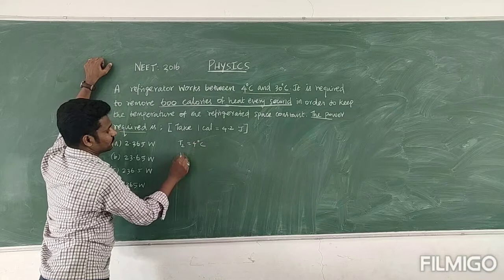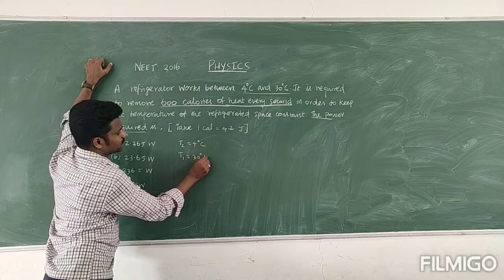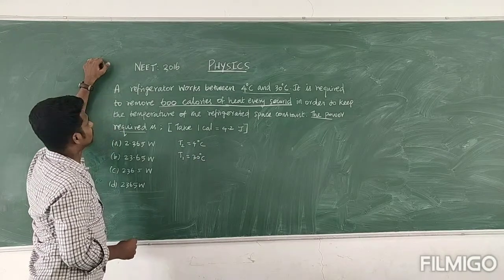4 degrees Celsius, then T1 is equal to 30 degrees Celsius. Then after that.